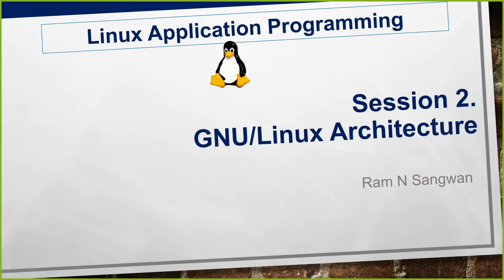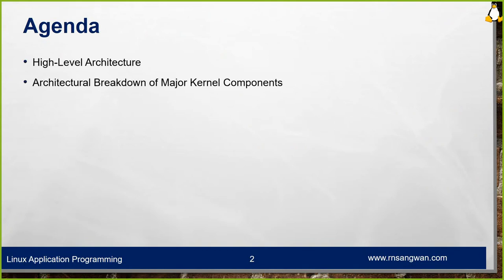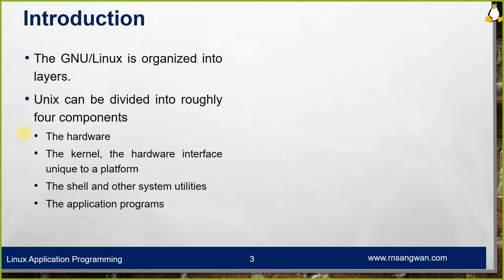Session 2: GNU Linux architecture. The agenda of the session is high-level architecture and architectural breakdown of major kernel components. Linux is organized into layers — why is a very common question: why do we need layers?